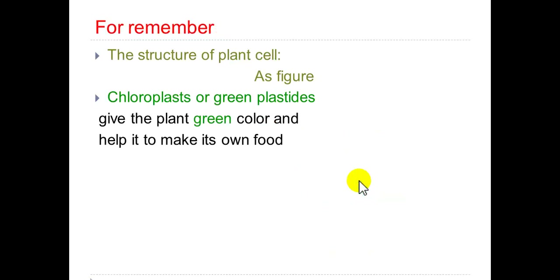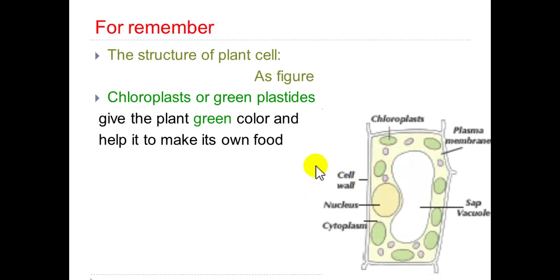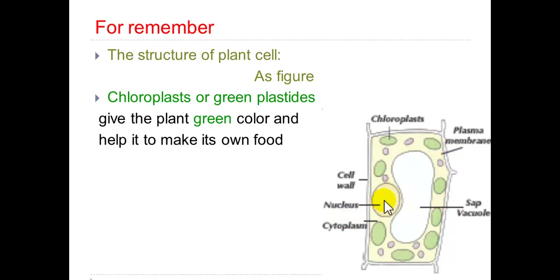Also, for review, let's remember the structure of the plant cell. We have six simple structures: cell wall, which surrounds the cell from outside; plasma membrane, which surrounds the cytoplasm; nucleus; chloroplasts or green plastids; central vacuole; and cytoplasm, which is the fluid that fills the space of the cell.